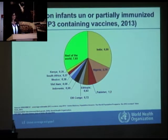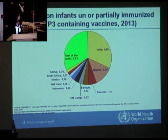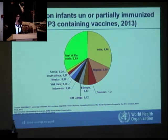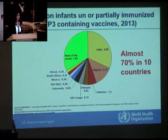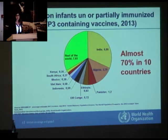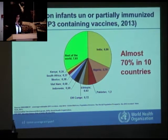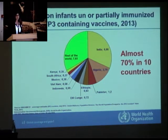Looking more closely at where those children are who are not reached with full or at least partial immunization, 21.8 million children are still missing the full benefit of vaccines. And 70% of these children live in 10 countries where coverage is lower and the biggest birth cohorts are, such as India — responsible for about a quarter of unvaccinated children — Nigeria, Pakistan, Ethiopia, DR Congo, and so on. So if we can focus on 10 countries, we can probably reach the global goal already.